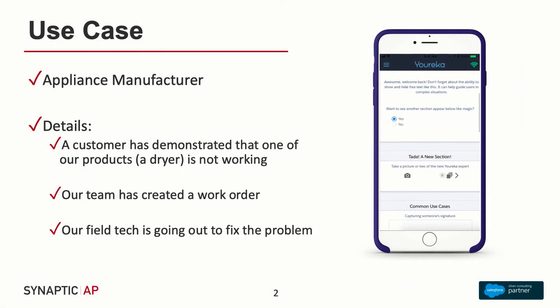We are acting as an appliance manufacturer, and what's happened is that a customer has demonstrated — maybe they've called in or submitted a case through our community — that one of their products is not working. It happens to be a dryer. Our team is creating a work order in the system, and we need to dispatch that work out to a service technician who's responsible for actually going and fixing that particular appliance.